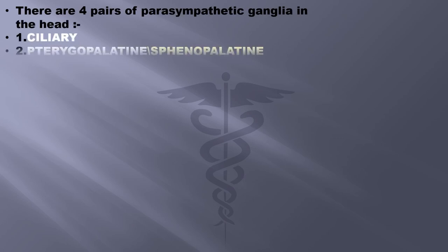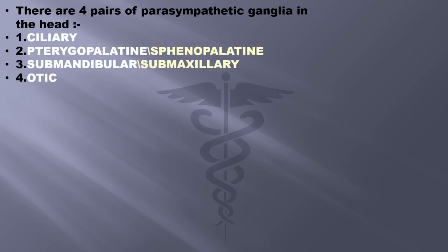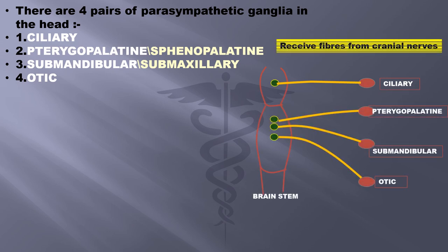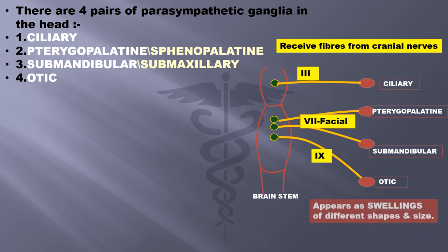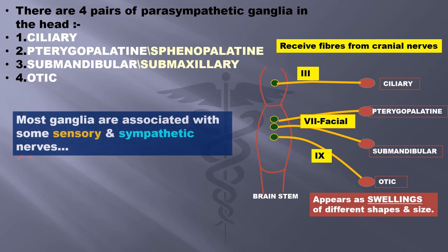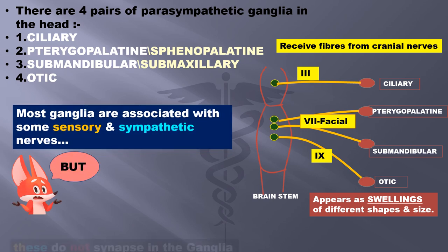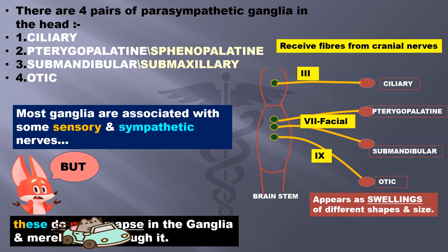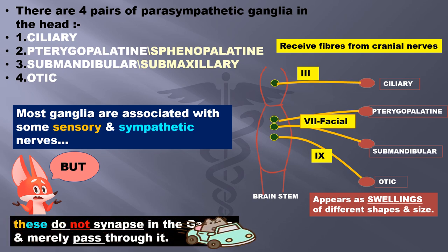There are four parasympathetic ganglia in the head: ciliary, pterygopalatine, submandibular, and otic. They receive fibers from cranial nerves — number three, the oculomotor nerve, and the two ganglia in the middle are both supplied by cranial nerve number seven, while the last is supplied by cranial nerve nine, the glossopharyngeal nerve. These ganglia appear as swellings of different shapes and sizes. Most of them are associated with some sensory and sympathetic nerves, but these nerves do not synapse inside the ganglia and merely pass through it.